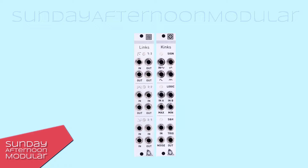The Links offers three functions. The one-to-three section is a buffered multiple. Buffered multiples come in handy if you want to distribute the pitch CV signal to multiple VCOs without having a voltage drop. Passive multiples can have a voltage drop which can result in slight changes of the pitch.